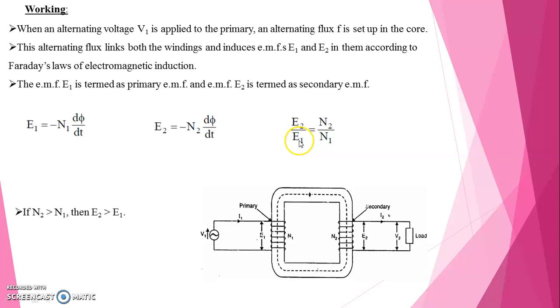Let us take the ratio between E2 and E1. E2 by E1 is equal to N2 by N1. Both negative signs will be cancelled. If N2 is greater than N1, then E2 is greater than E1.